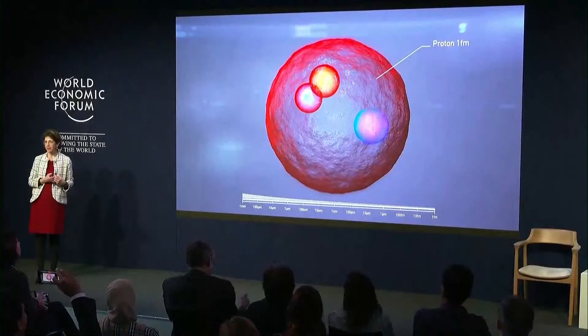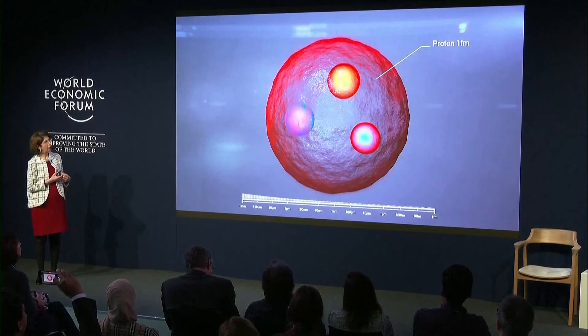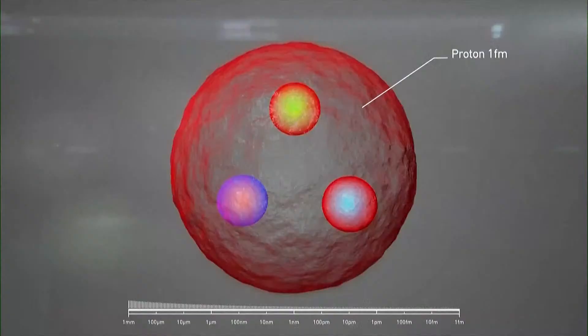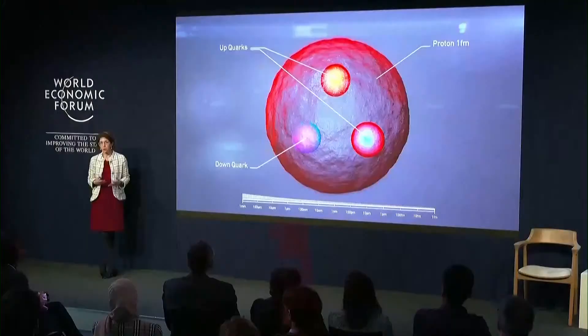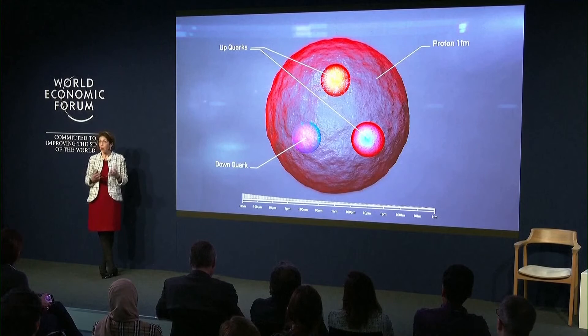Neutrons and protons have a size of one Fermi — that is 10 to the minus 15 meters. Neutrons and protons are not elementary particles either; they are made of substructures called quarks. The quarks are elementary particles as far as we know today. So electrons and quarks are the fundamental constituents of matter — they are elementary particles, and all the matter we are made of is made of electrons and quarks.